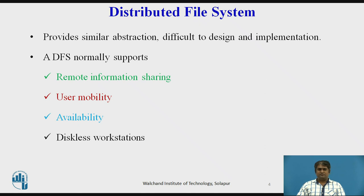Despite the advantages of permanent storage and sharing of information provided by file systems in a single processor system, distributed file systems normally support remote information sharing. A distributed file system allows files to be transparently accessed by processes on any node of the system, irrespective of the file location. Therefore, a process on one node can create a file that can be accessed at a later time by some other process running on another node.